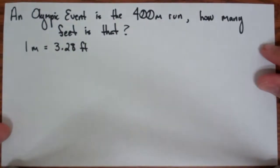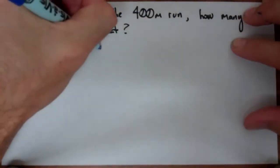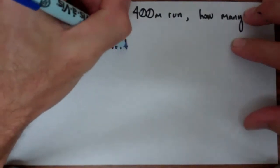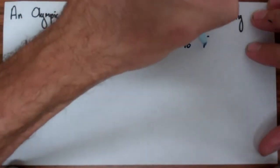For me, the 2012 Summer Olympics just finished up, and so a question that somebody might have is, for an Olympic event of the 400 meter run, how many feet is that? You're looking at the fact that one meter is equal to 3.28 feet, so now how do I convert that? Basically what you want to do is you need to convert from the meters to the feet.